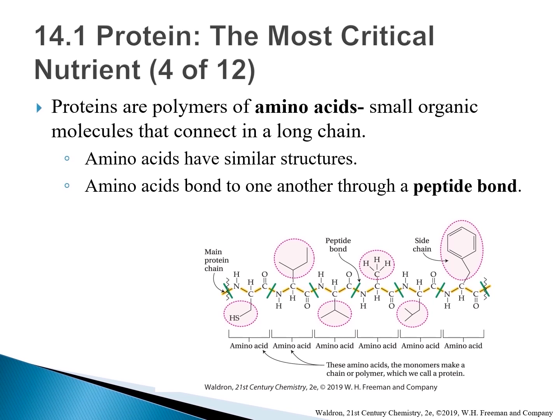Proteins are polymers of amino acids. Amino acids are small organic molecules that connect together to form long chain-like protein polymers. The backbone of the protein chain is highlighted in yellow. All amino acids have similar structures — they differ from each other only in the identity of the side chain they contain. The pink circles highlight the side chains that branch off the main protein chain. Each amino acid is bonded to the next, one after the other.